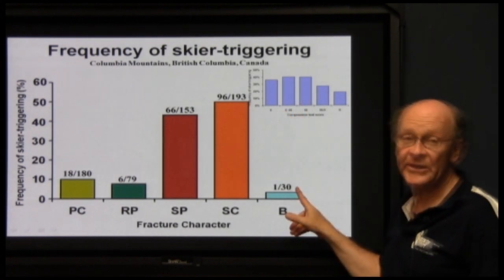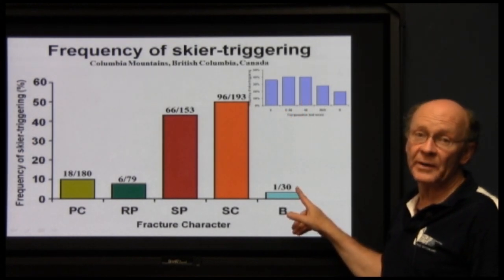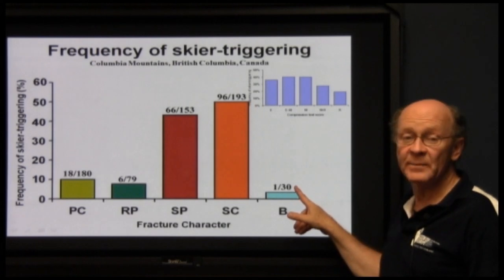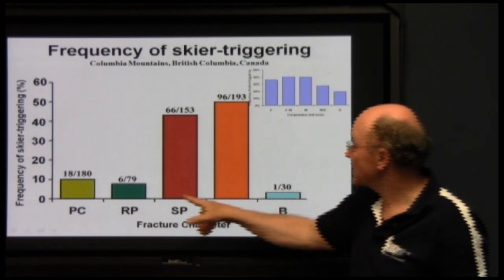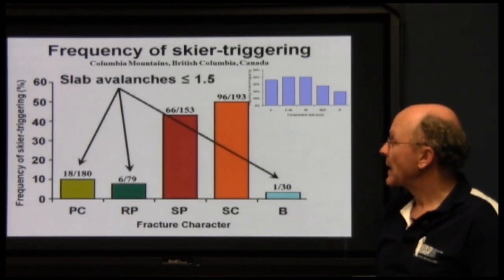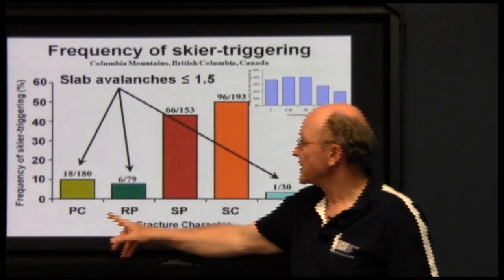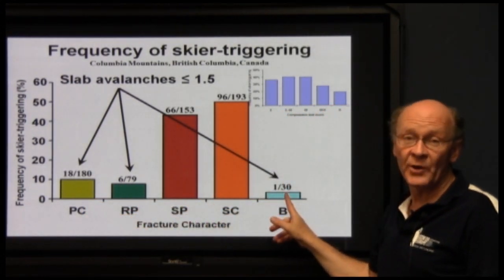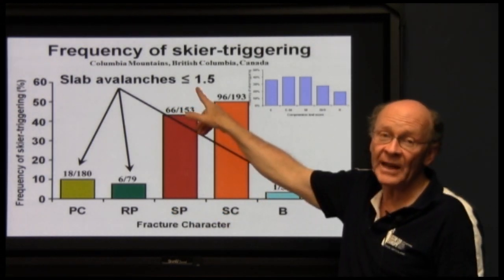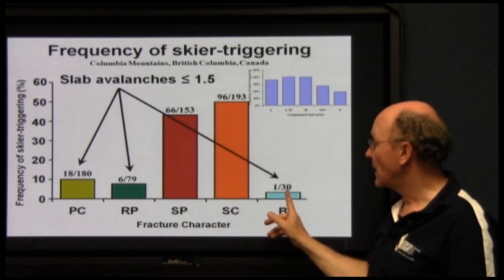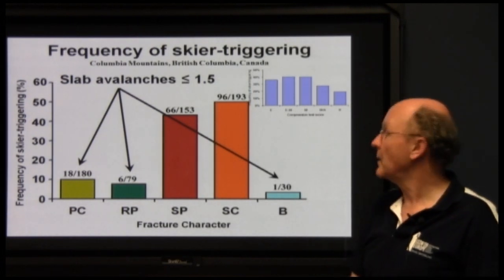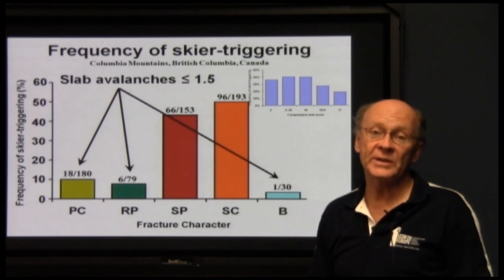The numbers above the bars indicate sample sizes: for example, we got 30 results with breaks and only one of those was on a slope where we skier-triggered. So we still get some false stables, but far fewer than when using number of taps only. In Alec's study, when we saw progressive compressions, resistant planars, and breaks, we did get a small number of skier-triggered avalanches, but none were larger than size 1.5 — no avalanches big enough to injure, bury, or kill a person.